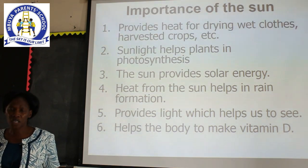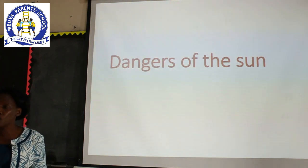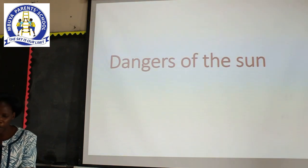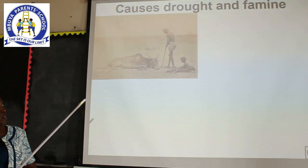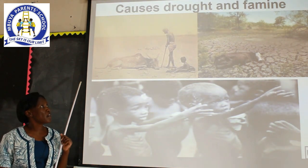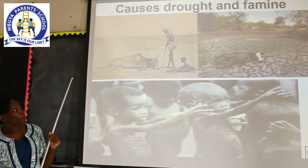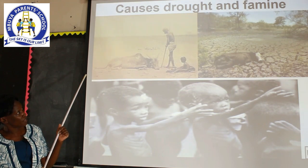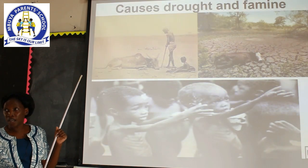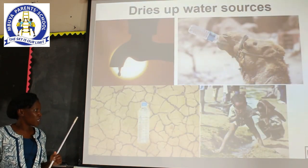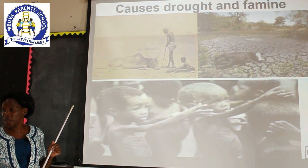Now, when the sunshine is too much, it becomes a danger to the environment. Let's look at the dangers of too much sunshine. First and foremost, too much sunshine leads to drought and famine. Drought refers to a prolonged period of too much sunshine. During this period, pasture for animals dries up, as you can see in the picture, which leads to death. Crops in the garden also dry, leading to famine. These young kids are begging for food due to shortage in their region.